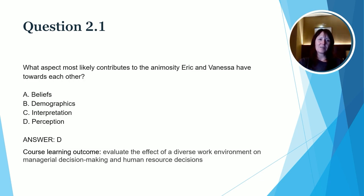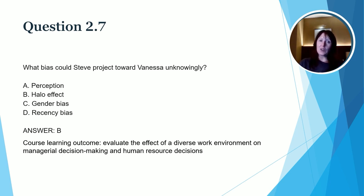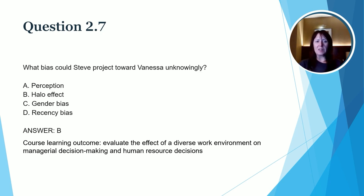In this course, you learned about different types of biases. This question asks what bias Steve could unknowingly project toward Vanessa. The correct answer is B, the halo effect — specifically the reverse halo effect, where you don't like someone so everything about them feels negative. Perception, gender bias, and recency bias don't have sufficient evidence in the case, but there is clear evidence of a possible reverse halo effect. This ties directly to the learning outcome: evaluate the effect of a diverse work environment on managerial decision making and human resource decisions.